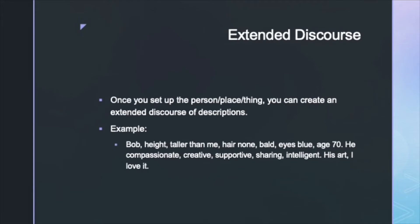She does not finish her work on time. Once you set up a person, place, or thing in the signing space, you can create an extended discourse of descriptions. I will demonstrate: Bob is a little taller than me, he doesn't have any hair — he's bald — his eyes are blue, and he's 70 years old. He's got a soft heart, he's supportive, very creative, sharing, smart, and his art — I really love it.